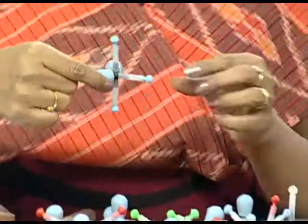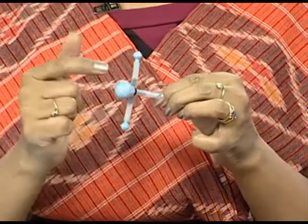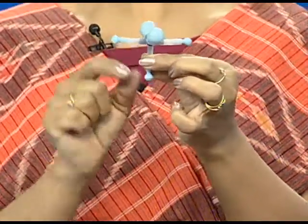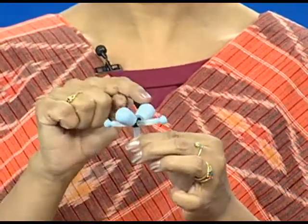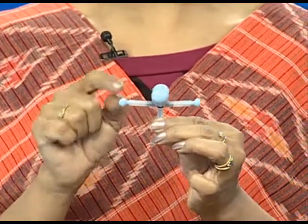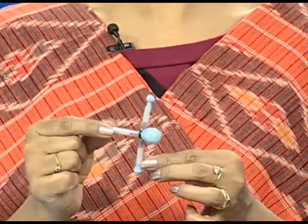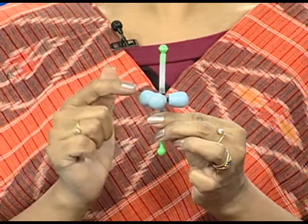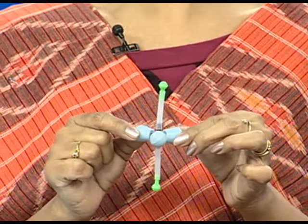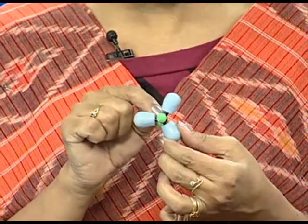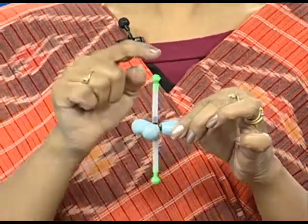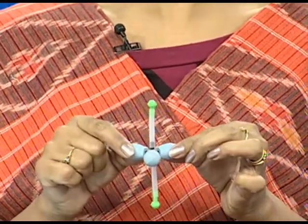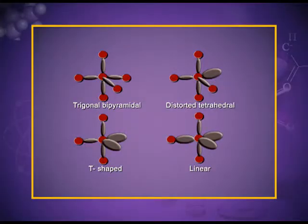When there are two lone pairs, these two lone pairs occupy the equatorial positions, and the shape of the molecule is T-shaped. There are lone pair–lone pair repulsions and lone pair–bond pair repulsions. The example of this type is ClF₃. The third type of distortion is when there are three lone pairs, all occupying equatorial positions. The example is xenon difluoride, XeF₂ — the black dot is xenon and the two fluorine atoms take the linear shape. All equatorial positions are occupied by lone pairs.